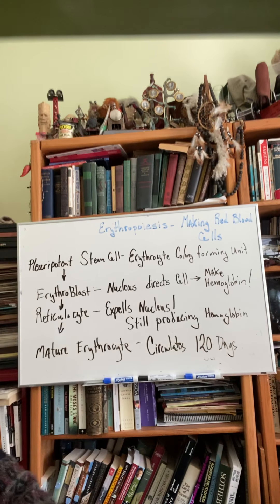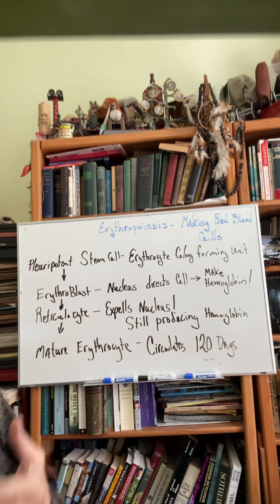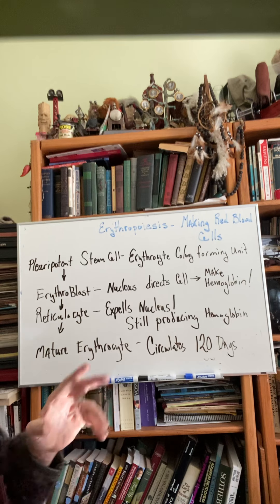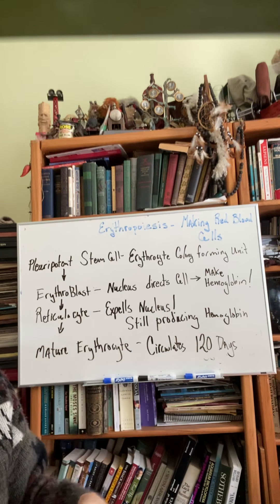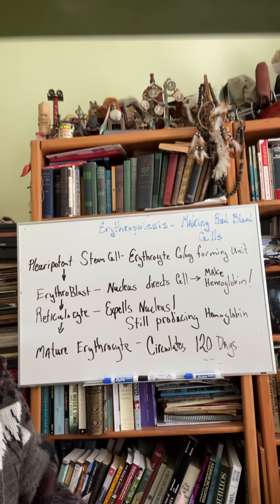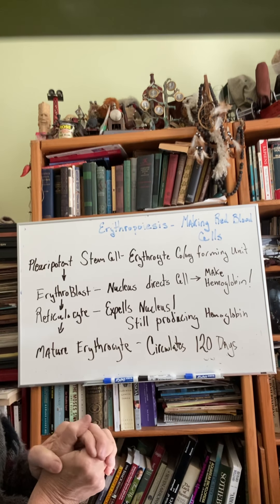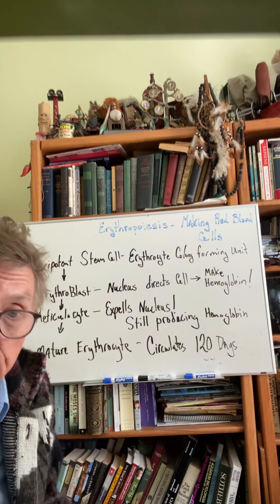An erythrocyte colony-forming unit is a cell that has now become specialized to become a red blood cell. These erythrocyte colony-forming units go through a proliferation stage, so you make a whole lot of them, and then they start becoming a red blood cell.